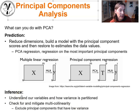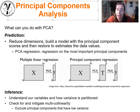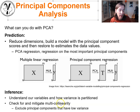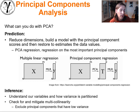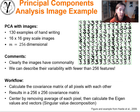We can also do inference — understand our variables and how variance is partitioned across different features. We can check for and mitigate multicollinearity. By removing principal components with very low variances, we eliminate redundancies in the data.